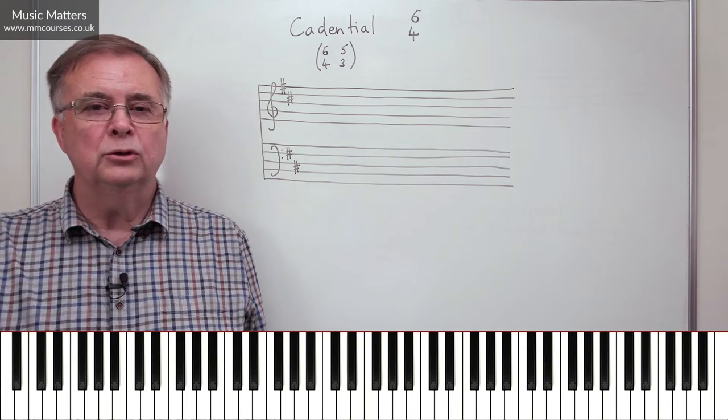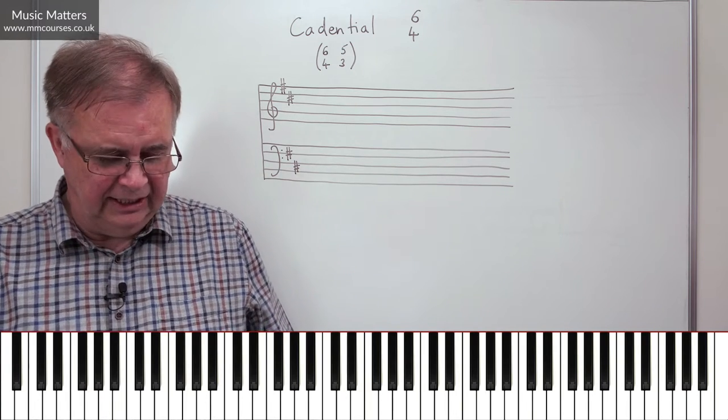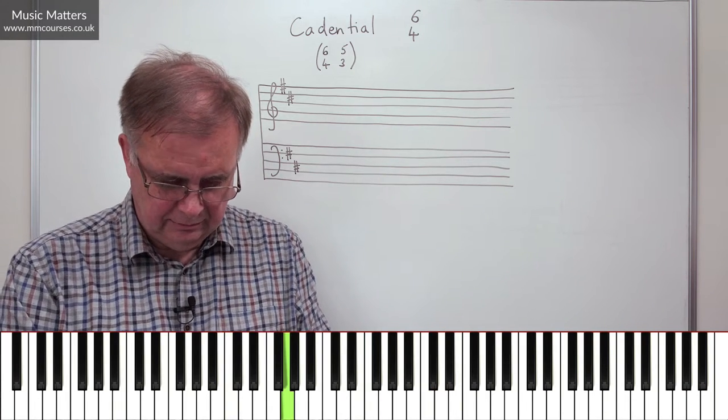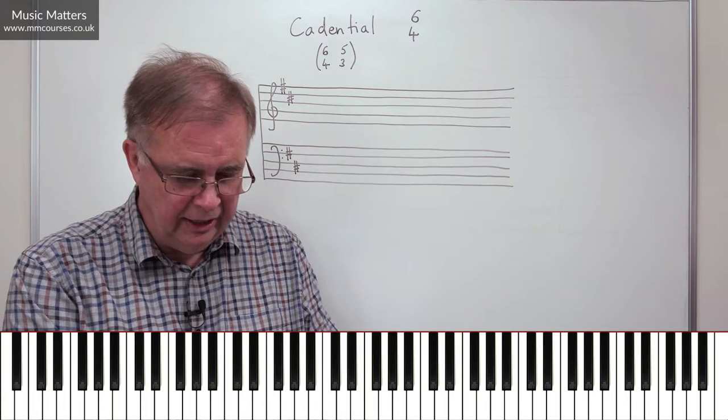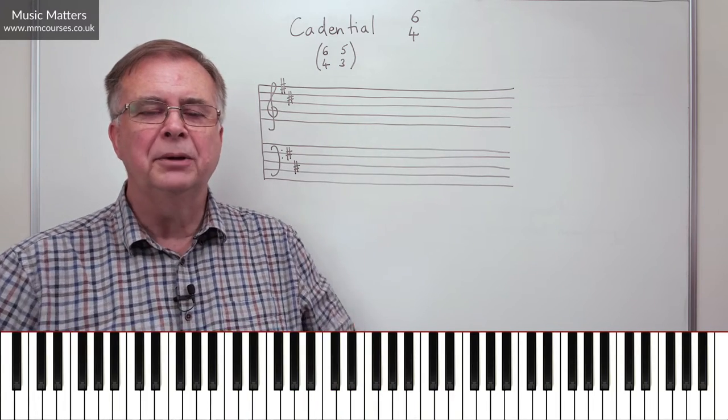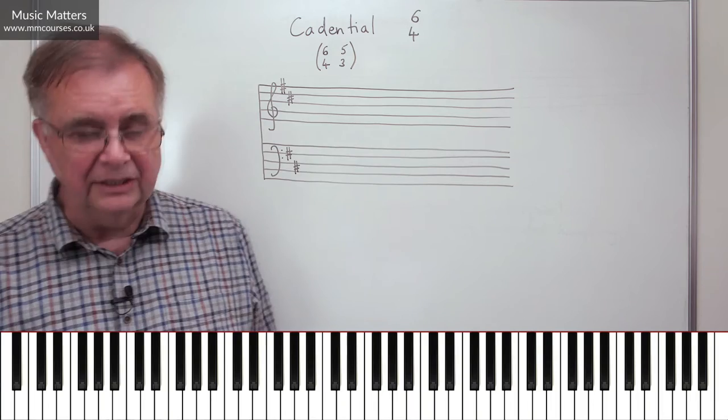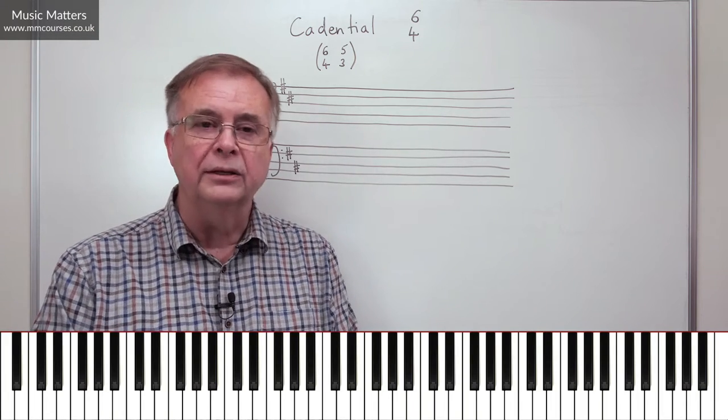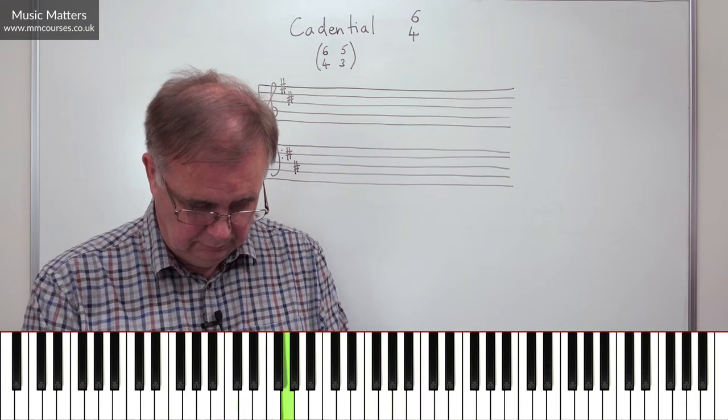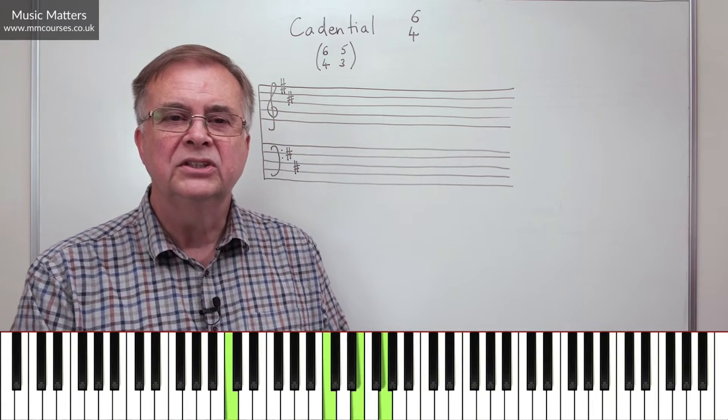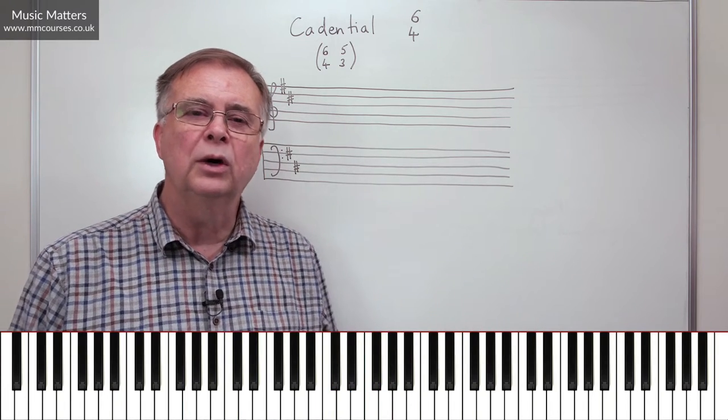So if we go chord V to chord I, we call it a perfect cadence. So I'm in C major, V, I. That's a perfect cadence. Or a plagal cadence is when I go IV, I. So that's going chord IV followed by chord I.